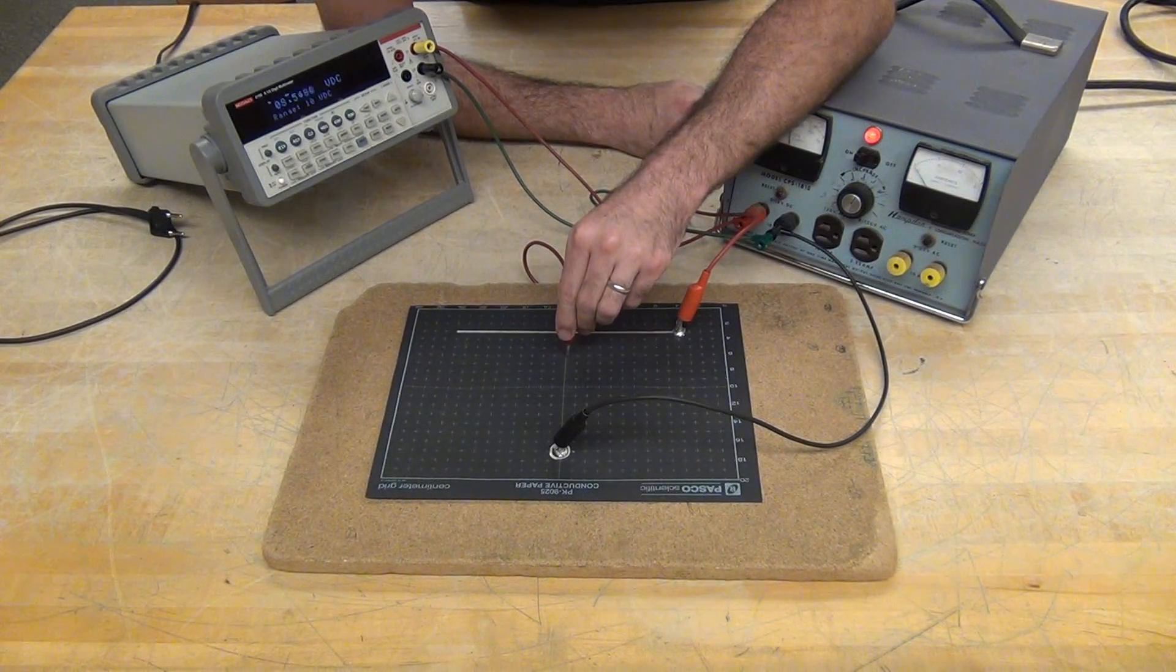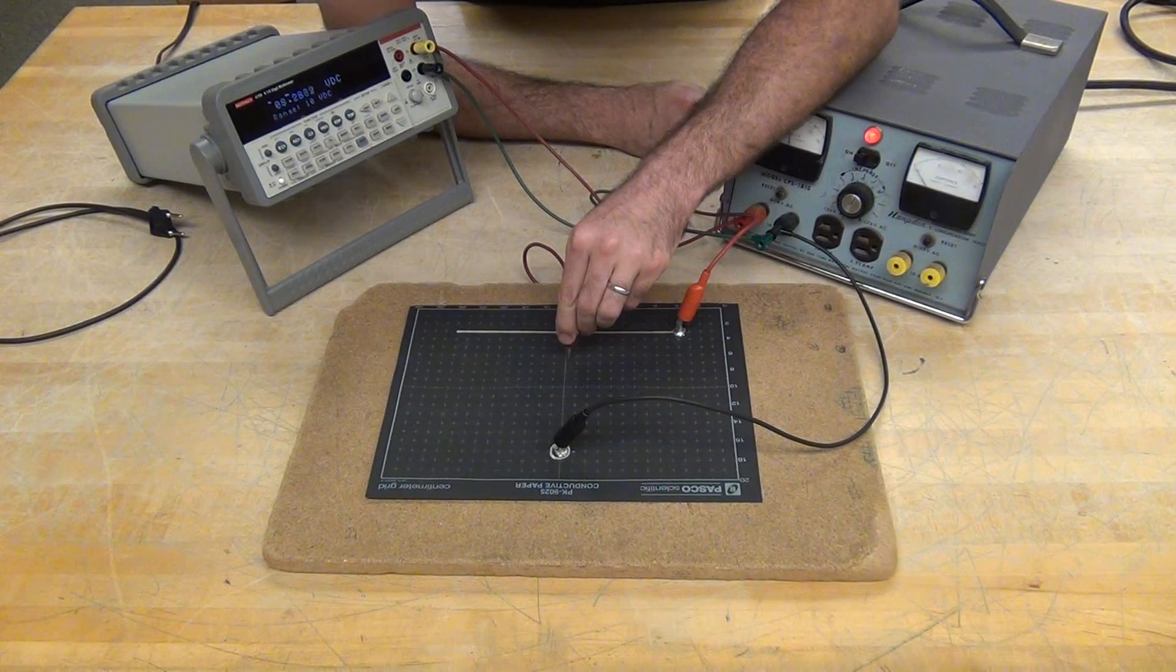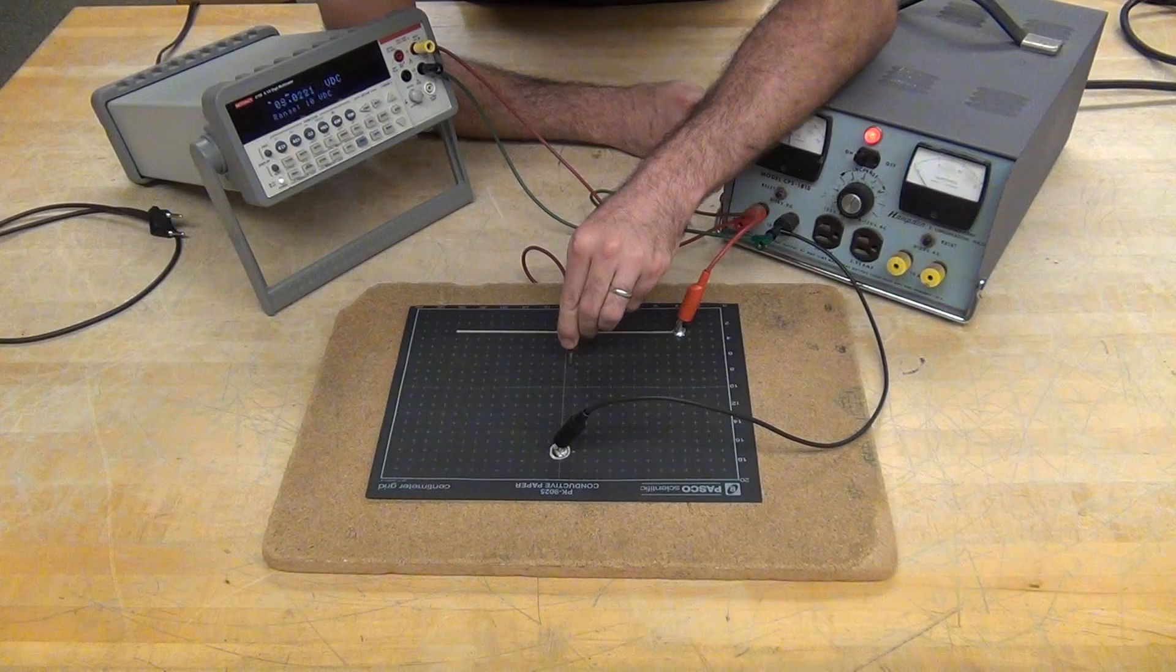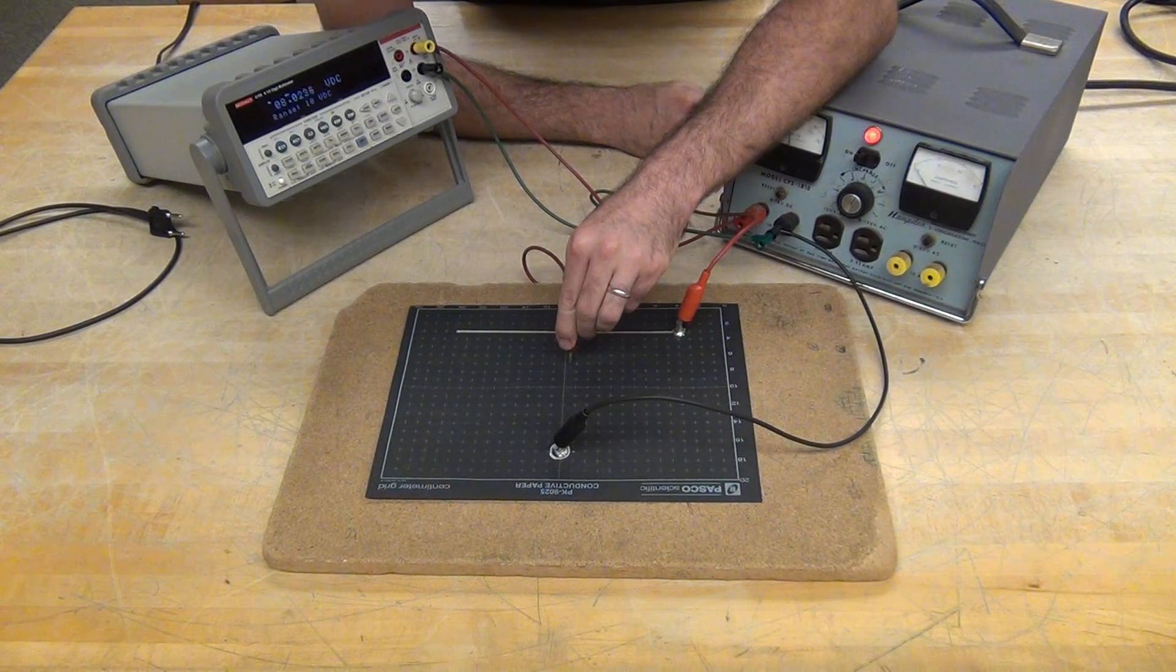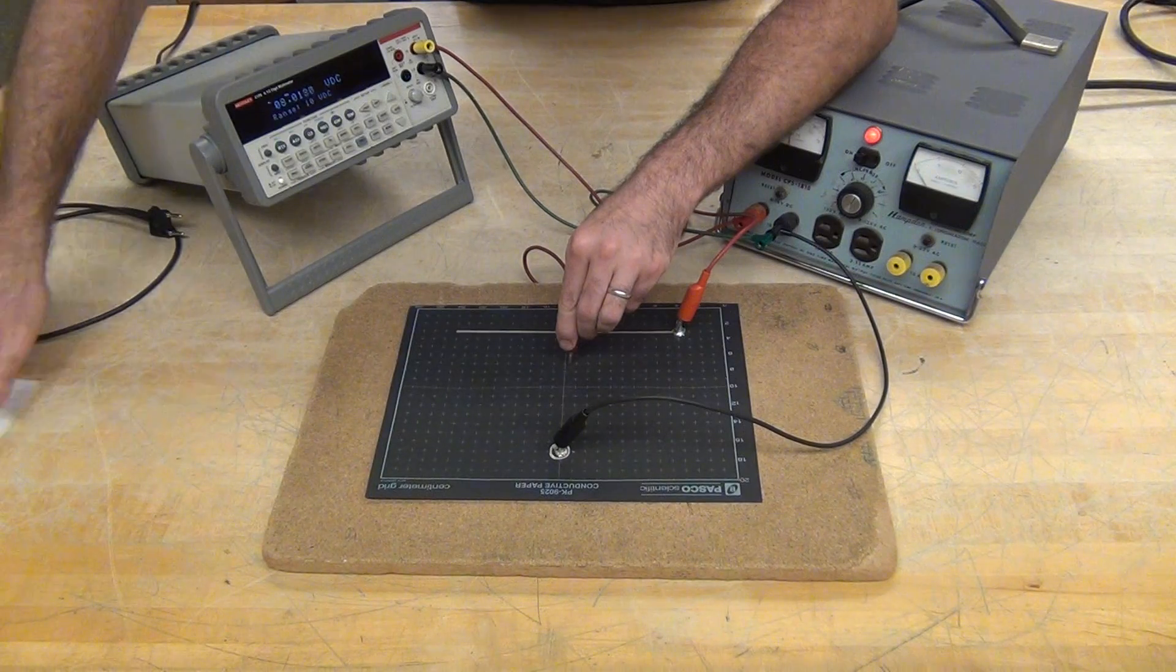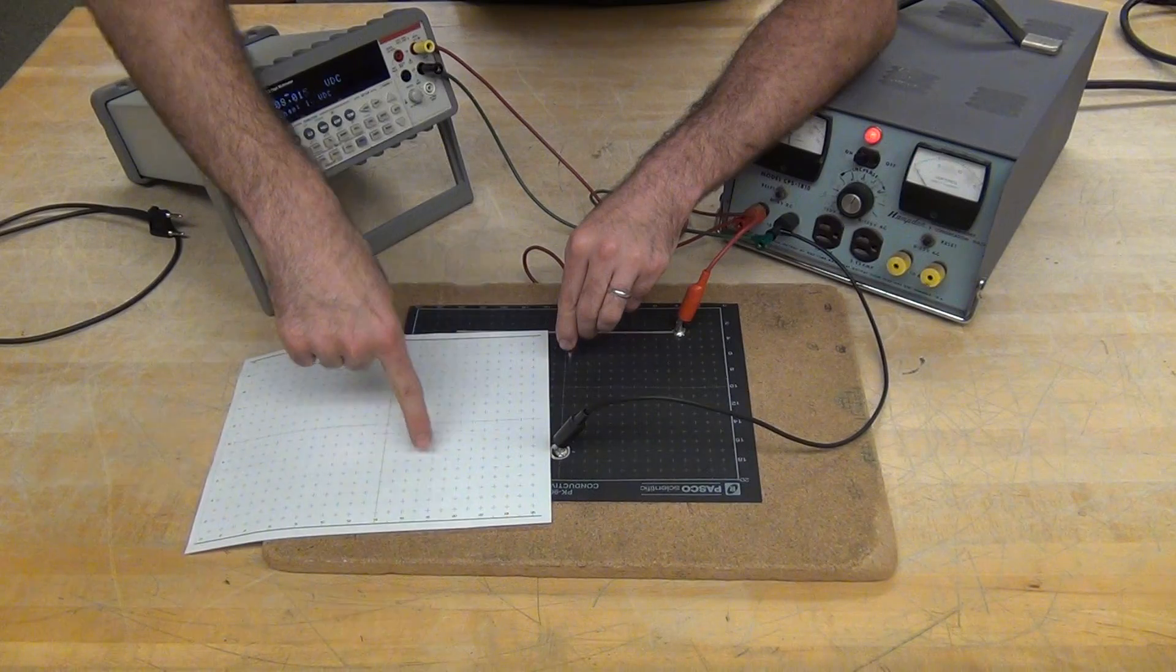So I'll look for a point where the potential is 8 volts, moving my probe around until I find 8 volts to within 8.0. And then I would mark that point or have a lab partner mark that point on my sheet.